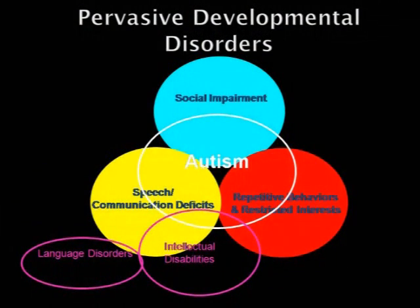Right now we're working from a diagnosis based on three domains: social impairment, communication including speech — so the absence of speech is a major feature in the current diagnosis — and repetitive behaviors. This is what defines autism. We then have PDD, which is a bigger circle and allows you to omit one of these. And then we have Asperger's syndrome, which is a smaller circle meaning you cannot have certain things.